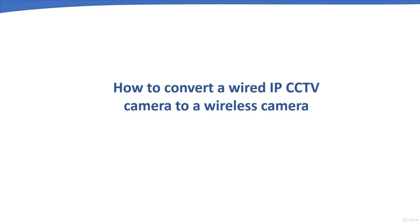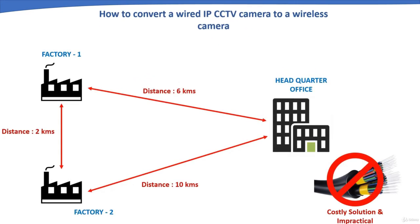This chapter covers how to convert a wired camera into a wireless camera. Assume a customer has two factories — Factory 1 and Factory 2 — at different locations and wants to view CCTV cameras from a headquarter office, but there is no existing network infrastructure and fiber optic cable cannot be laid. This issue can be solved by using wireless access points at all locations to transfer CCTV data from the factories to the headquarter office, ensuring clear line of sight and no signal interference.